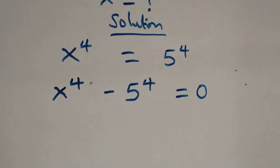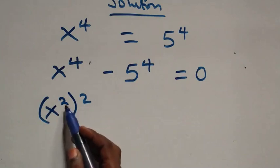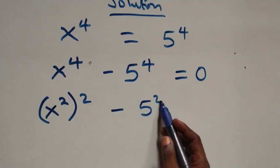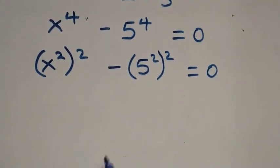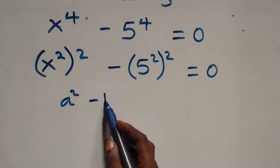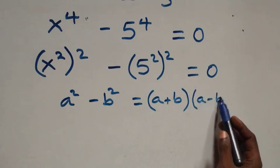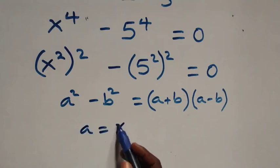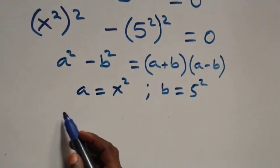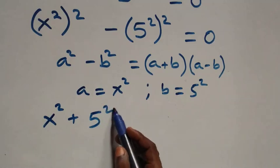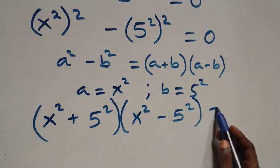Equals to 0. From here, what we have becomes x squared squared, which gives us 4, minus 5 squared squared, equals to 0. This follows the difference of two squares: a squared minus b squared is the same as (a plus b)(a minus b). Here a stands as x squared and b stands as 5 squared, so it becomes (x squared plus 5 squared)(x squared minus 5 squared) equals to 0.